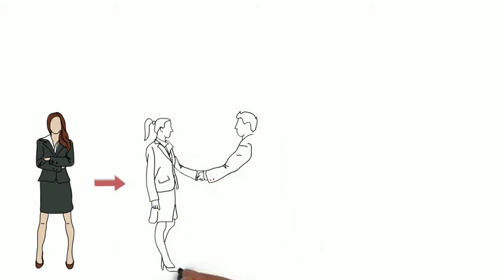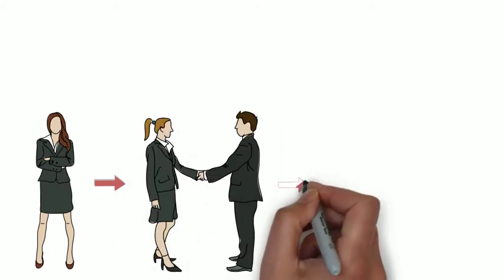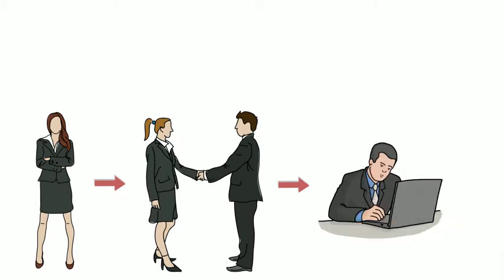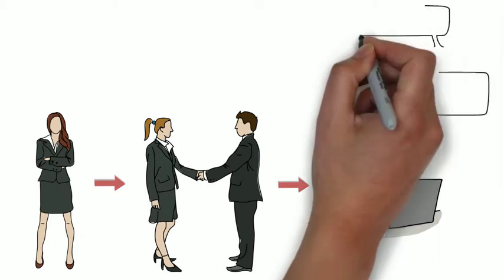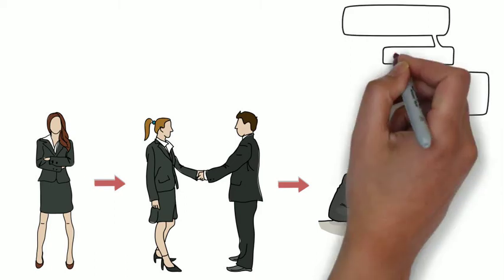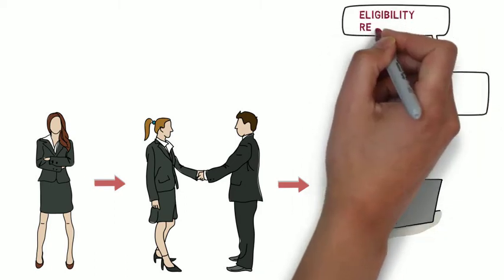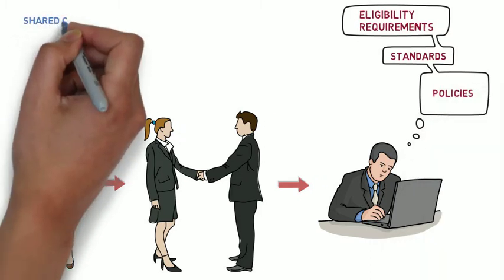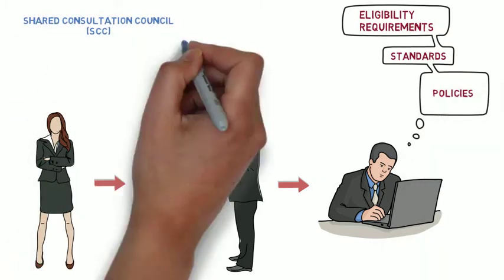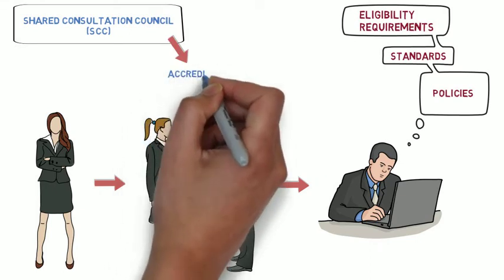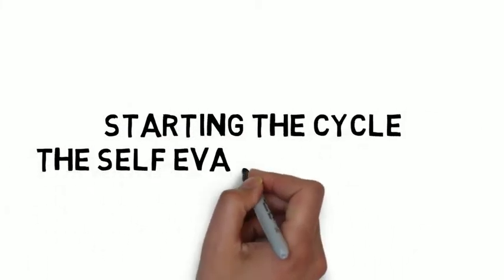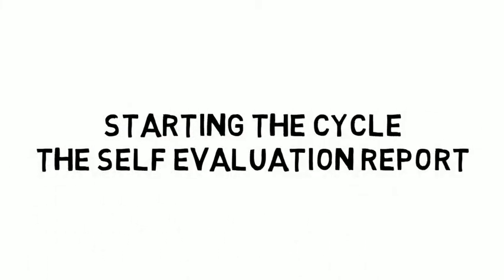The chief administrative officer of a college directs accreditation efforts. At Southwestern College, the Superintendent/President works closely with the Accreditation Liaison Officer to steer the accreditation process. The ALO maintains oversight to ensure the college remains in full compliance with commission standards, eligibility requirements, and policies at all times. The Shared Consultation Council (SCC) guides the process through its standing committee, the Accreditation Oversight Committee.